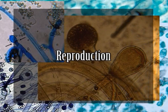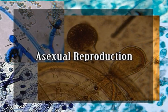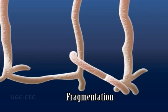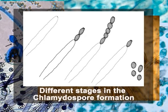The fungus reproduces both asexually and sexually. For asexual reproduction, the methods are fragmentation, chlamydospores, and sporangiospores. In fragmentation, due to mechanical injury, the vegetative hyphae break up into smaller fragments and each fragment develops into a new mycelium. Chlamydospores are formed under unfavorable conditions: in anaerobic conditions, tips of the hyphae become septate, each segment secretes a thick wall and assumes a round shape — these are called chlamydospores.